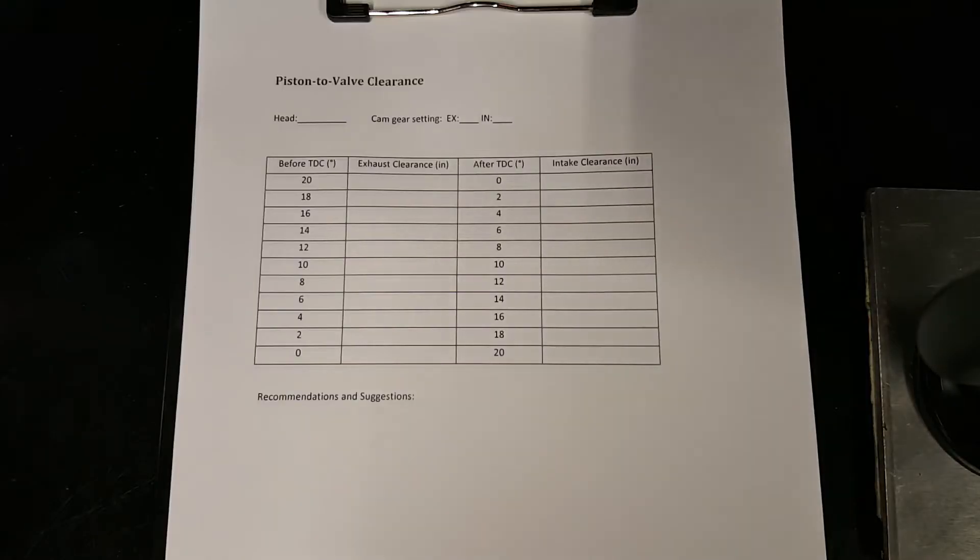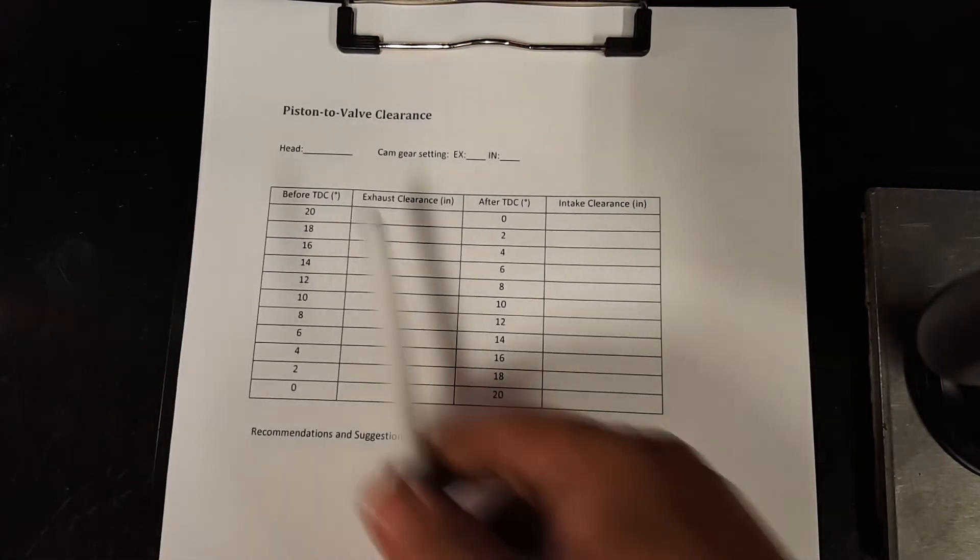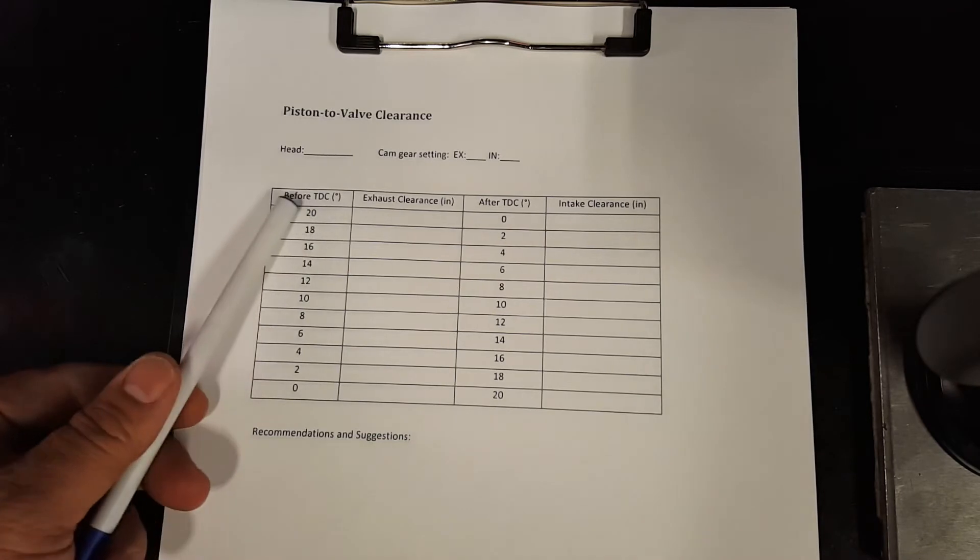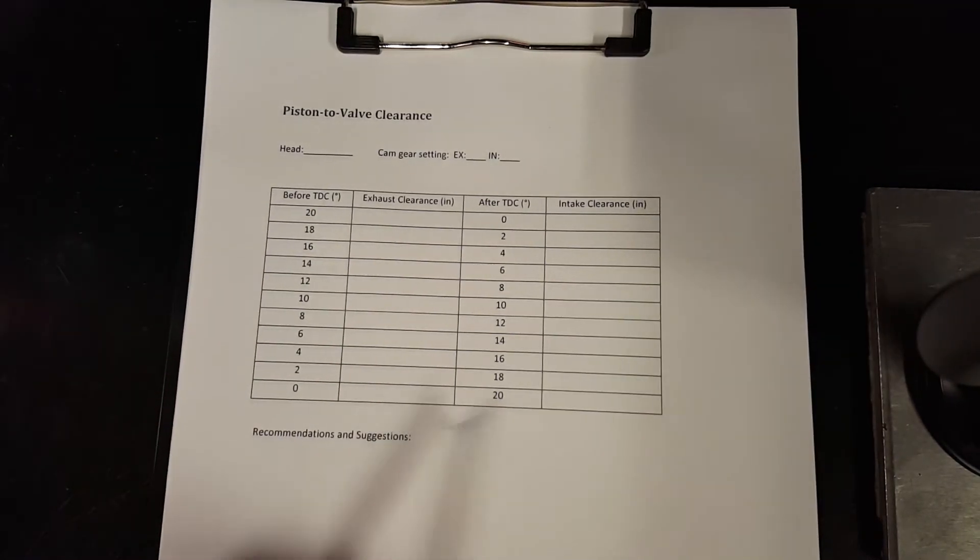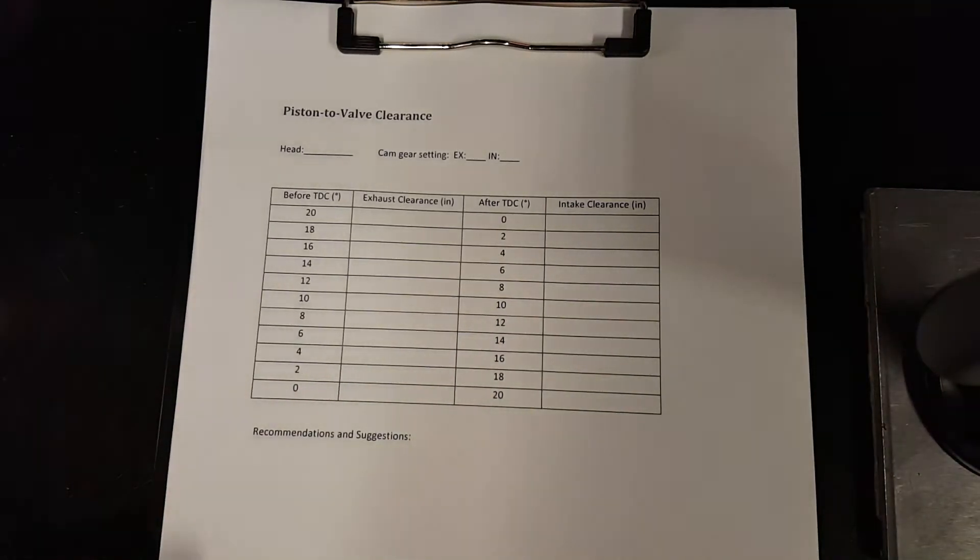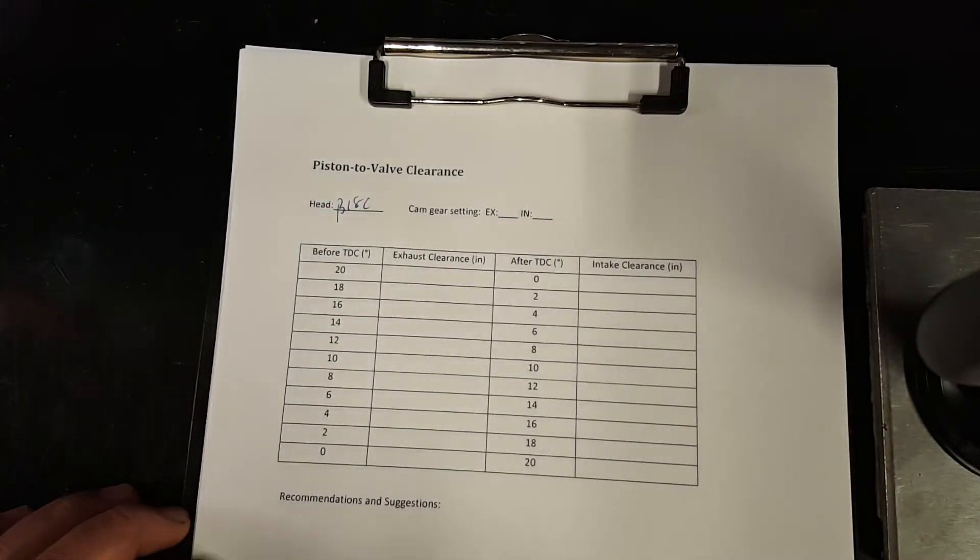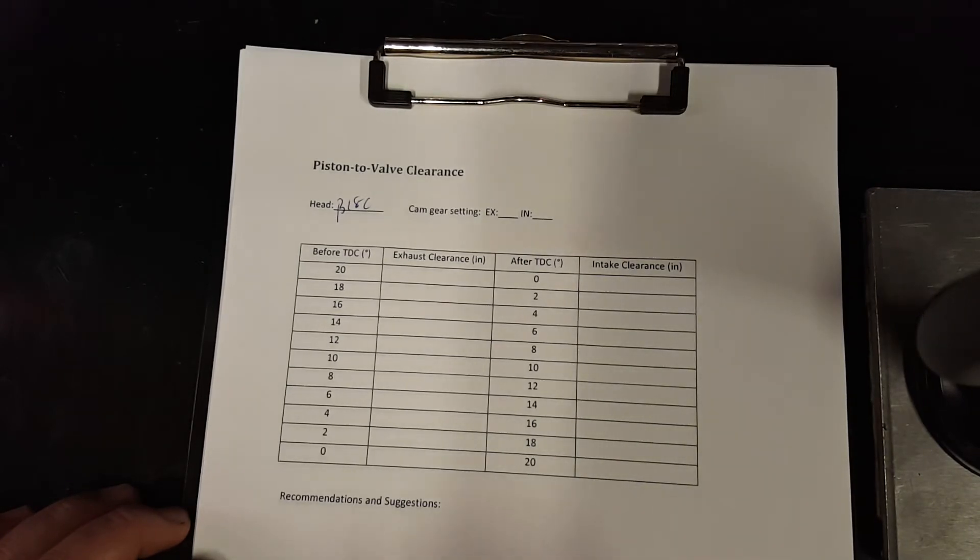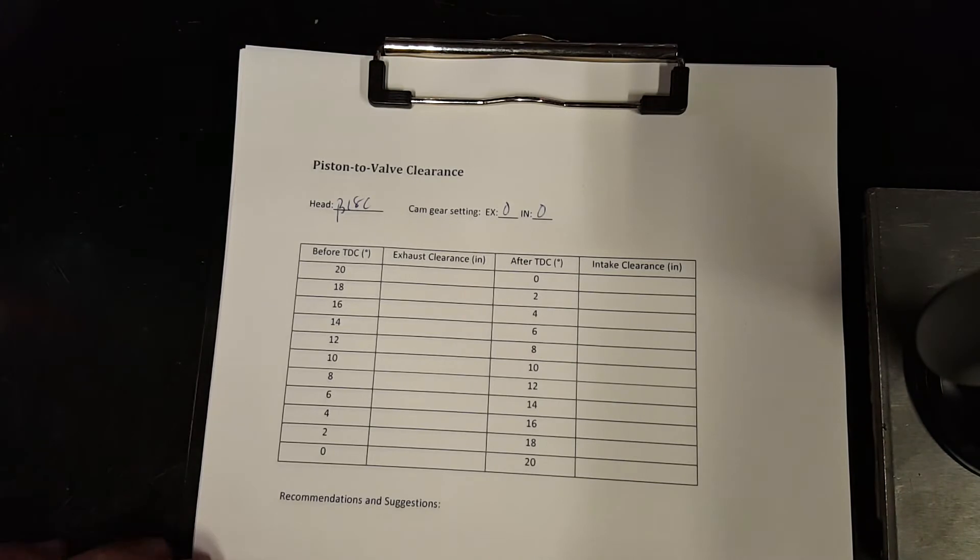Next, we want to check piston to valve clearance. Using this sheet, I made it starting from 20 degrees before top dead center to check the exhaust clearance, piston to valve clearance, and after top dead center to check the intake clearance. For this head, it is a V18C, and from our cam gear setting after degreeing the cams, it was at 0, 0 for these cams.